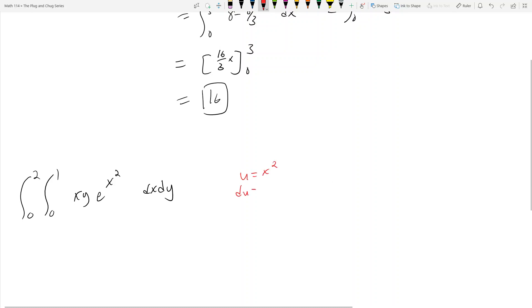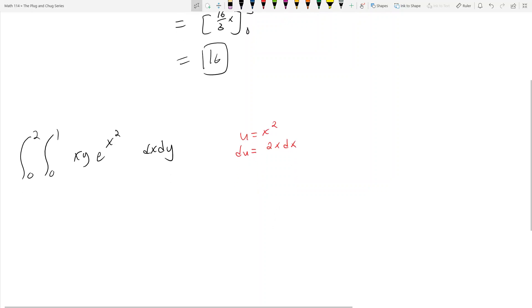This should be high school stuff, especially if you're taking 114 in the fall. So what do I get? Now I get, I need to introduce a 2 on the inside and then I need to introduce a 1 half on the outside. So now I get y times e to the u du dy, right? Since 2x dx becomes du and then this x squared becomes u.